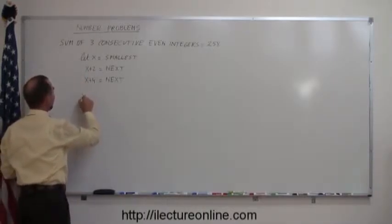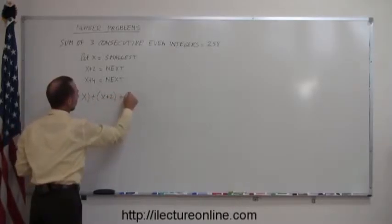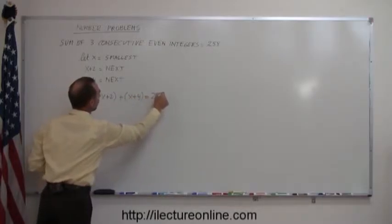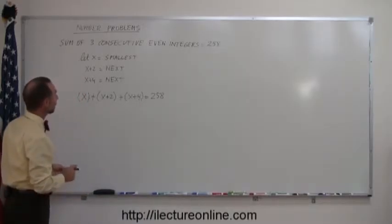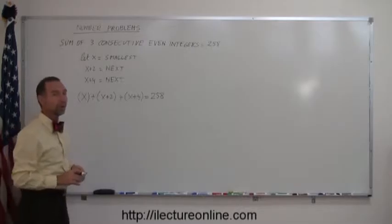So that means that x plus, and I'll put parentheses around it, x plus 2 plus x plus 4 must add up to 258. So this is how I write in algebraic terms that I'm adding 3 consecutive even integers so they all must be 2 apart from one another.